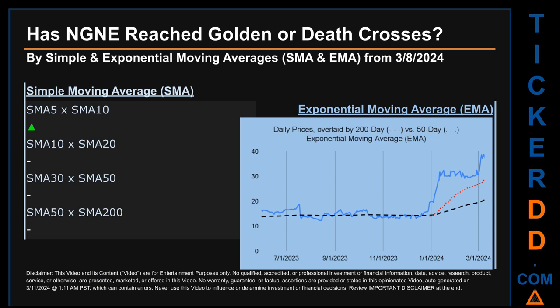A golden cross is a bullish signal — it appears when a ticker's short-term moving average crosses above its long-term average. Vice versa, a death cross is a bearish signal, when the short-term crosses below its long-term moving average. For our opinionated analysis off third-party and abstracted data, we looked at both simple moving average (SMA) and exponential moving average (EMA). The latter calculates moving average by giving more weighting to recent prices. For EMA, you can be the judge.